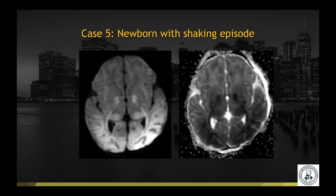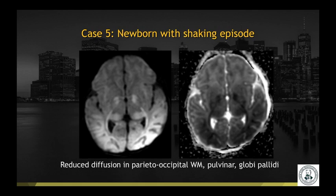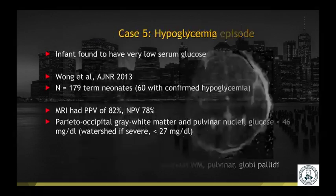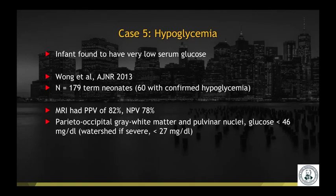Case number five: a newborn with a shaking episode. Diffusion and ADC map demonstrate reduced diffusion in the parietal and occipital white matter, the pulvinar nuclei of the thalami, as well as the globi pallidi. This was a case of hypoglycemia; the infant was found to have a very low serum glucose. A large cohort study published in AJNR demonstrated that this distribution — involving the parietal and occipital lobes as well as the pulvinar nuclei — had a positive predictive value of 82% and a negative predictive value of 78%.